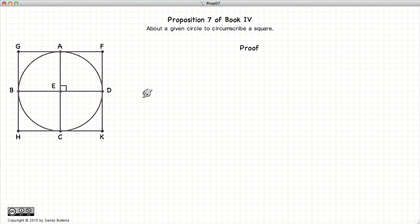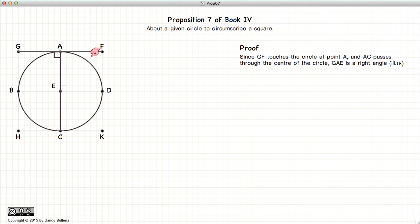And how do we prove that this is so? Well, GF touches the circle so that the angle at point A is a right angle by definition. Similarly, we can show that the angles at point D, C and B are all right angles.